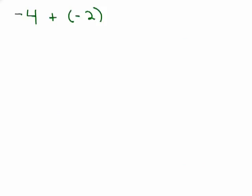Here's one for you to try. See what happens when you have negative 4 plus negative 2. If you drew a little picture, what would that look like? You'd have 4 negatives and 2 more negatives, so all together you're going to have 6 negatives.